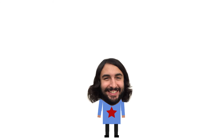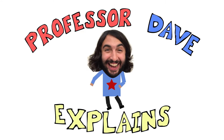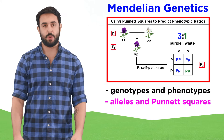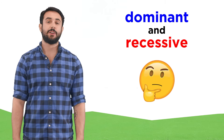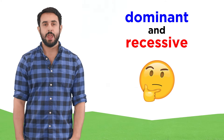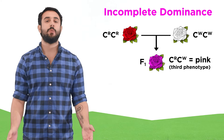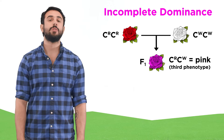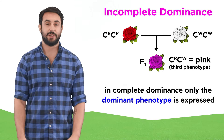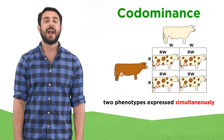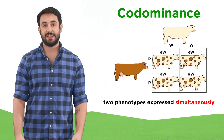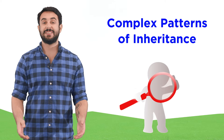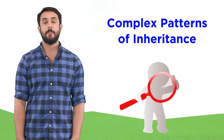Professor Dave again, let's revisit Mendel. When we looked at Mendelian genetics, we learned all about genotypes and phenotypes, alleles and Punnett squares, but even then we already began to see that the basic model of dominant and recessive alleles does not explain certain phenomena. We looked at incomplete dominance, such as when true breeding red and true breeding white snapdragons are hybridized to yield an entirely pink F1 generation, thus a third intermediate phenotype is involved, totally unlike complete dominance where only the dominant phenotype is expressed. We also looked at codominance, where two phenotypes can be expressed simultaneously, as was the case with the cows with both white and brown coloring. Building on what we already know, let's continue to extend this understanding into still more interesting and complex patterns of inheritance.